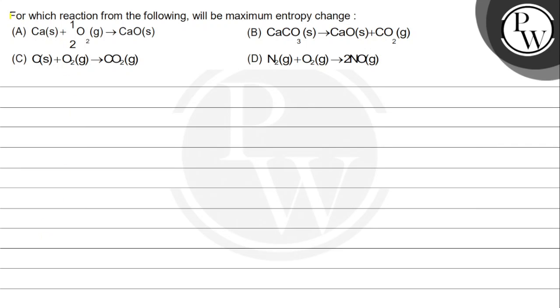Hello, let's see this question: For which reaction from the following will be maximum entropy change? Option A: Ca(s) + 1/2 O2(g) → CaO(s). Option B: CaCO3(s) → CaO(s) + CO2(g).